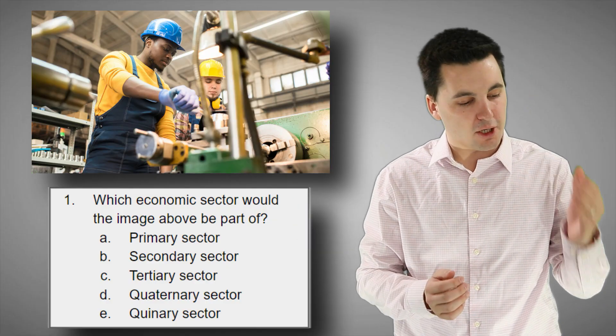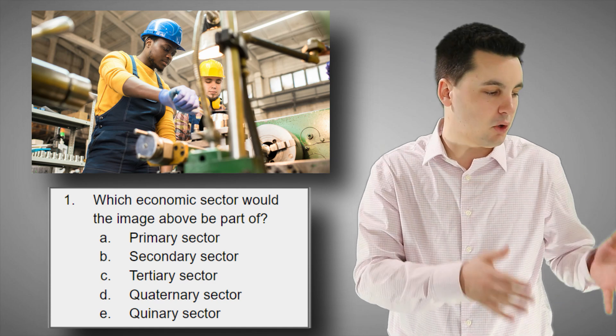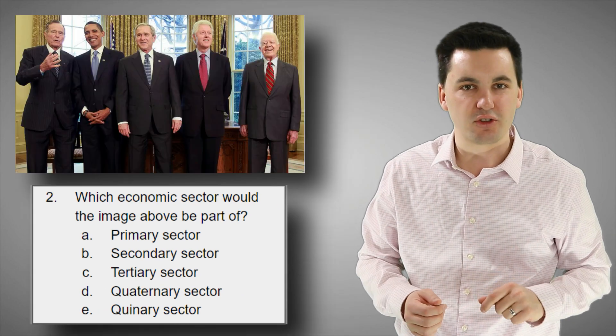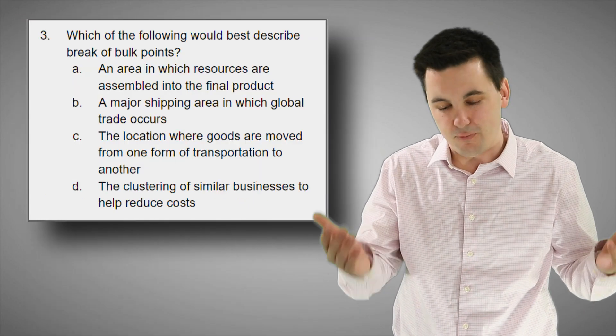All right, geographers, today we reviewed break-of-bulk points, the different economic sectors. We talked about bulk gaining, bulk reducing, Weber's least cost theory, and also agglomeration. We covered a bunch of stuff, so let's make sure you understand everything and review.